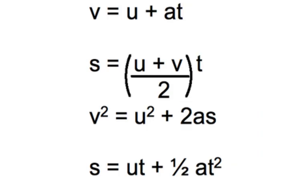So here they all are. We've got v equals u plus at, s equals u plus v over 2 times t, v squared equals u squared plus 2as, and s equals ut plus a half at squared.